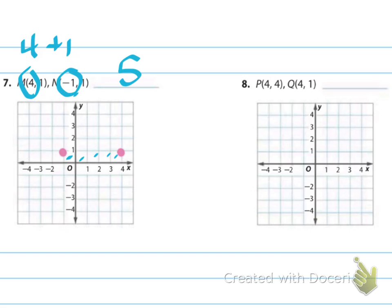For problem eight, go over four, up four for the first point; go over four, up one for the second. The y-values are different this time, and because they're in the same quadrant, we subtract them — four minus one gives three units. Count one, two, three to verify your answer.